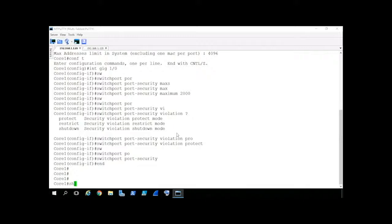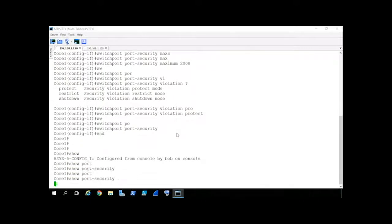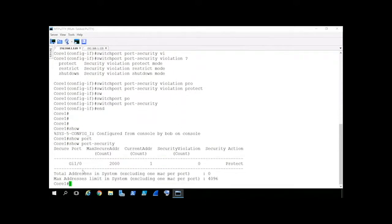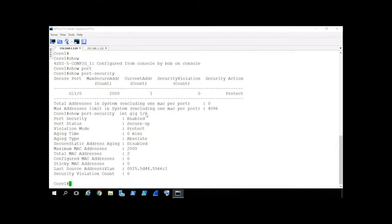Now we can verify our work. Show port-security, press enter. Great. Gig 1/0, max MAC address is 2,000, and the security action of protect. Okay, let's do the same command, show port-security for interface gig 1/0, see the details specifically on that interface. Fantastic. One trunk port down, one to go. Let's go over to core 2.